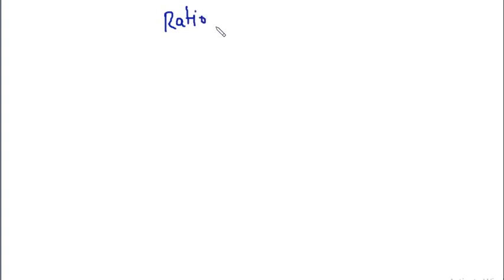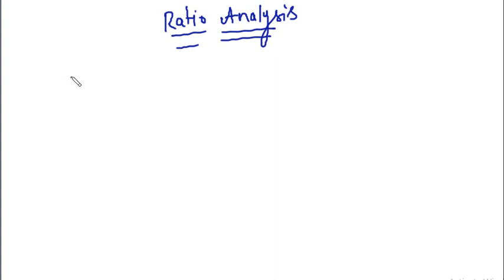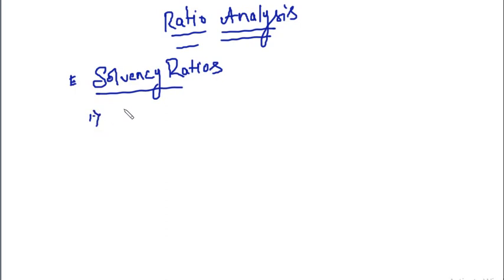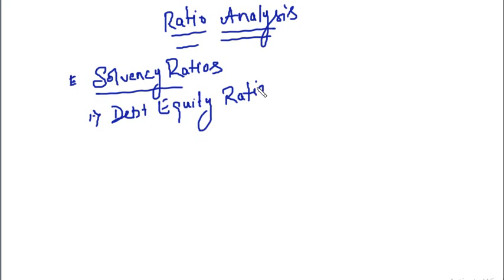Friends, we are going to continue with our topic of ratio analysis. In the last lecture we covered solvency ratios, and under solvency ratios we covered the first ratio — debt equity ratio — which shows the relationship between owners' funds and borrowed funds: how much funds have been borrowed from outsiders and how much is the owners' fund.